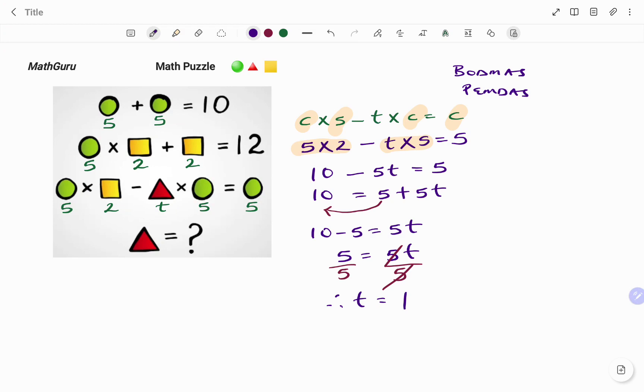So therefore my triangle is 1. And a quick check is if my triangle is 1, on my left hand side I have 5 times 2, that will give me 10, minus on my right hand side 1 times 5, that's 5. 10 minus 5 is 5.